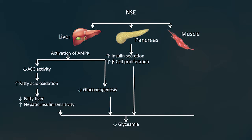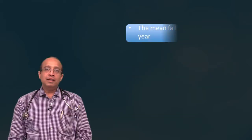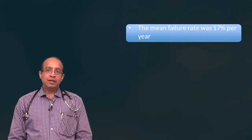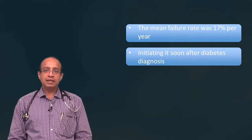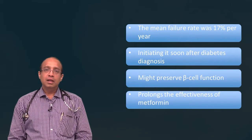At the level of the muscle, there is activation of AMP kinase, increased GLUT4 translocation and synthesis, leading to increased glucose uptake and improvement in glycemia. The mean failure rate was 17% per year. Initiating metformin soon after diabetes diagnosis might preserve beta cell function and prolong the effectiveness of metformin.